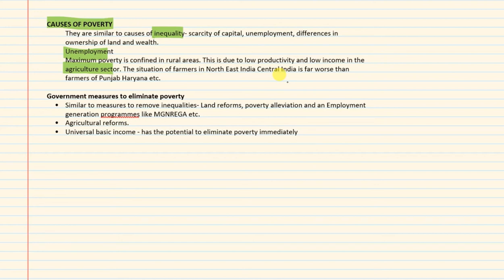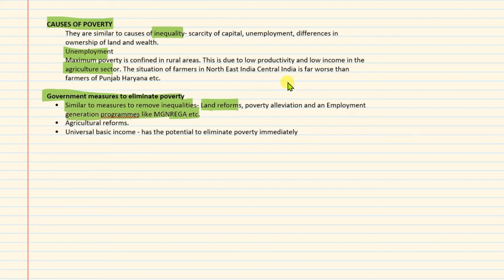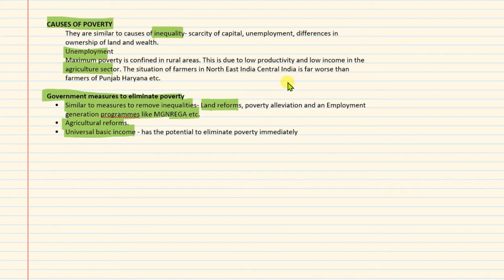To eliminate poverty, we need to focus on rural areas and introduce agricultural reforms to increase agricultural productivity and farmers' income. Government measures to eliminate poverty are similar to measures to remove inequality, covered in previous lectures — for example, land reforms, poverty alleviation and employment generation programs such as MGNREGA, and agricultural sector reforms. Universal Basic Income, though not yet implemented in India, could immediately eliminate poverty if all persons were guaranteed a basic income, though the challenge remains how to finance it.